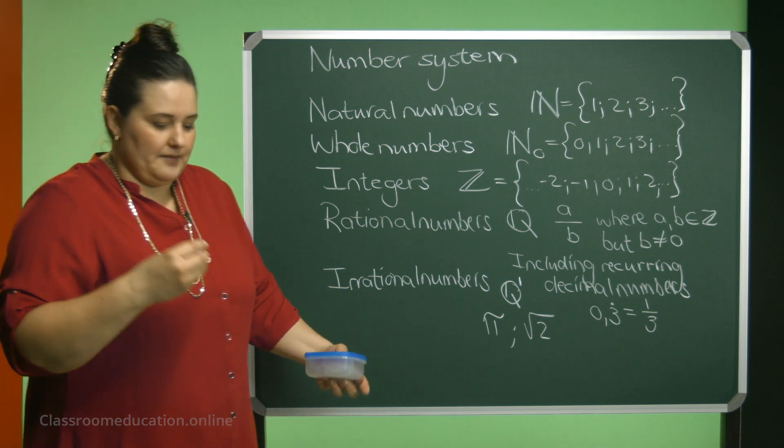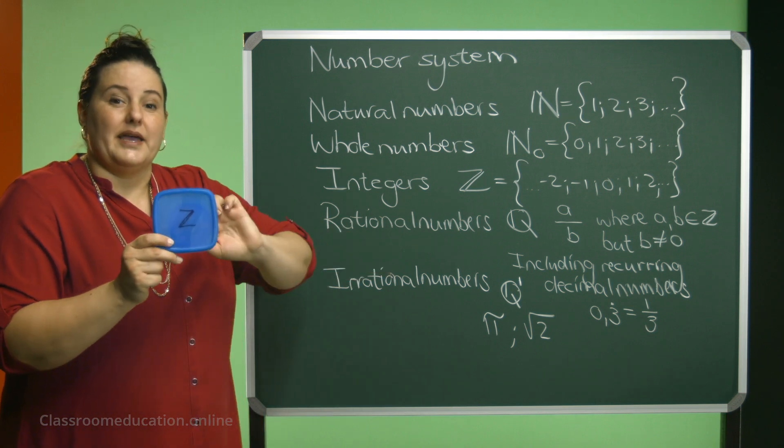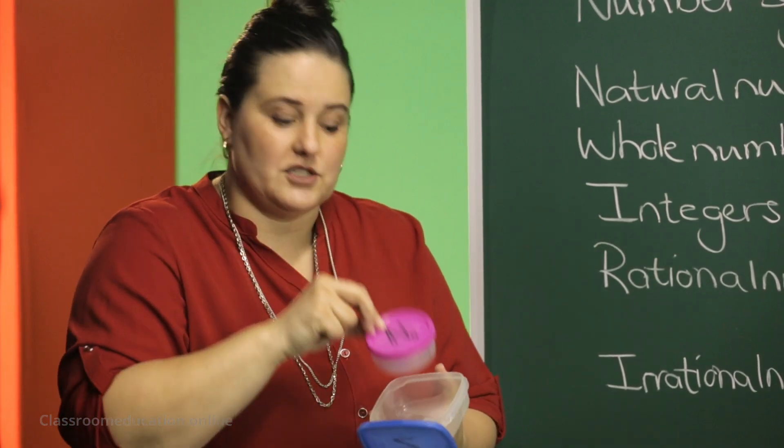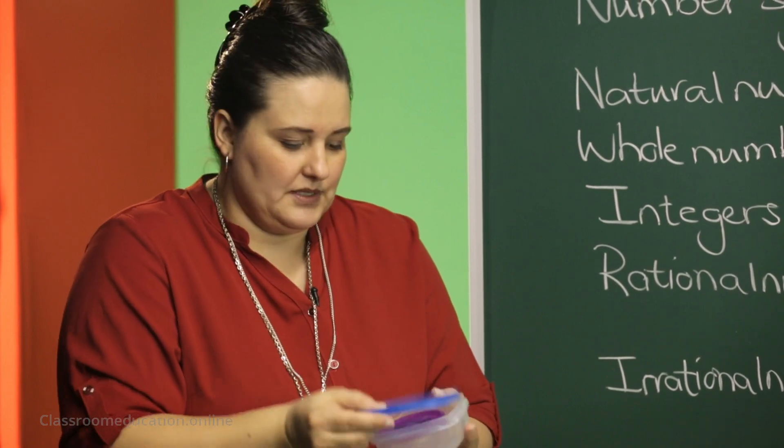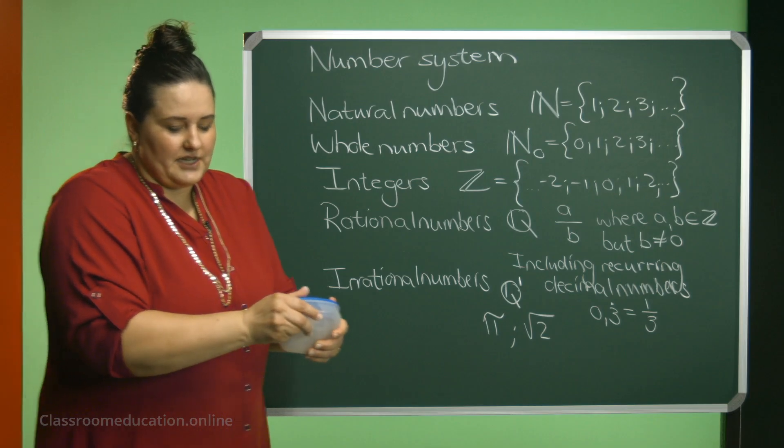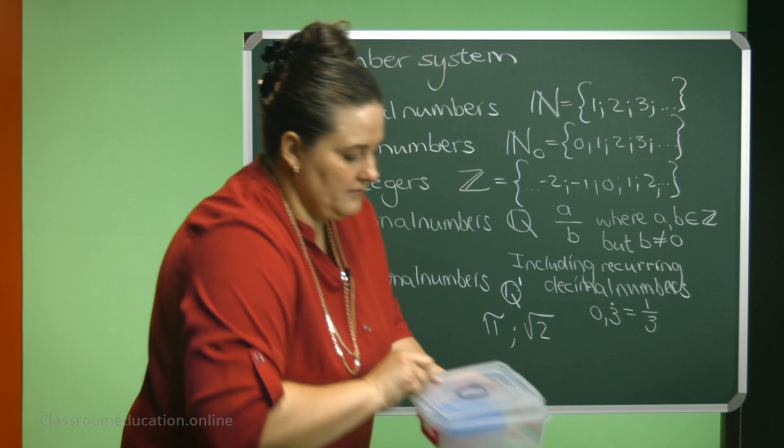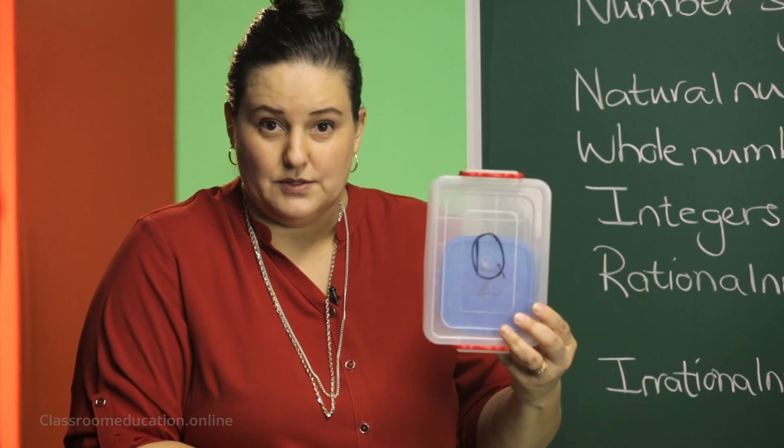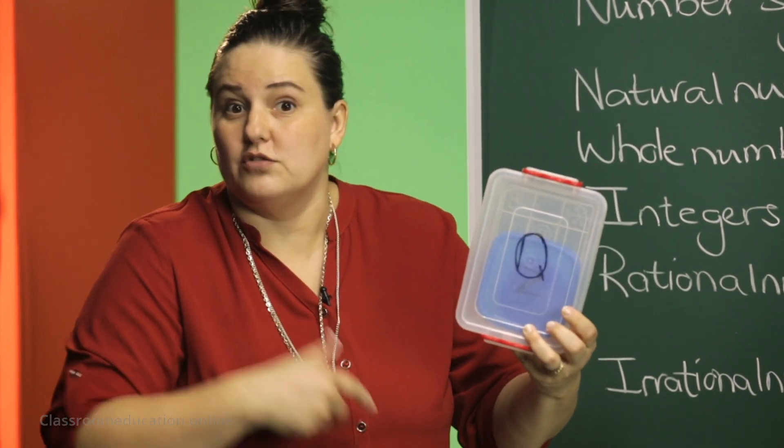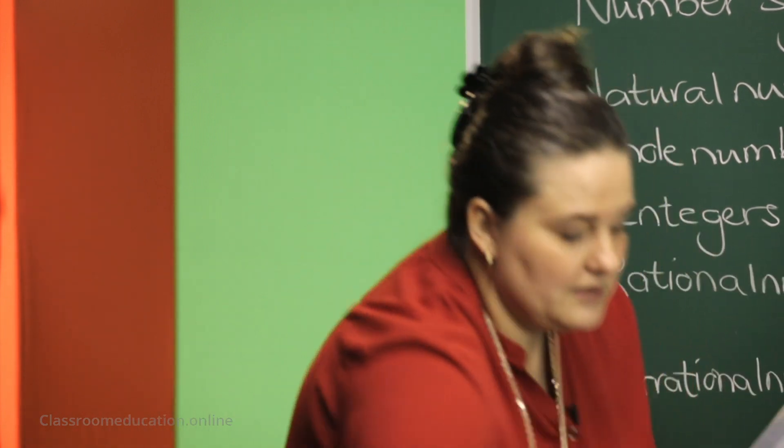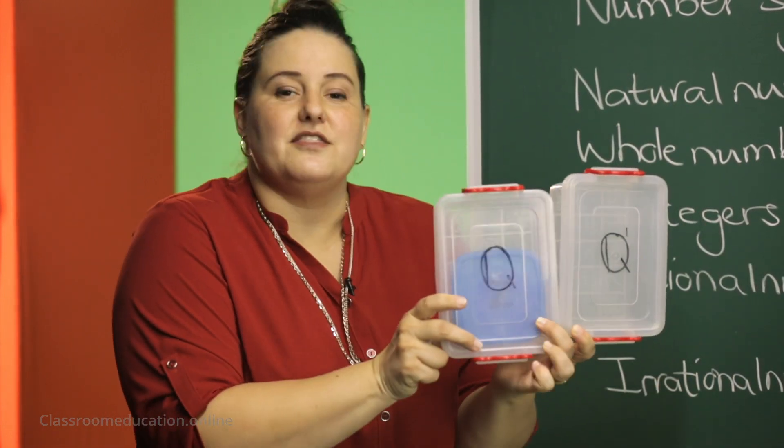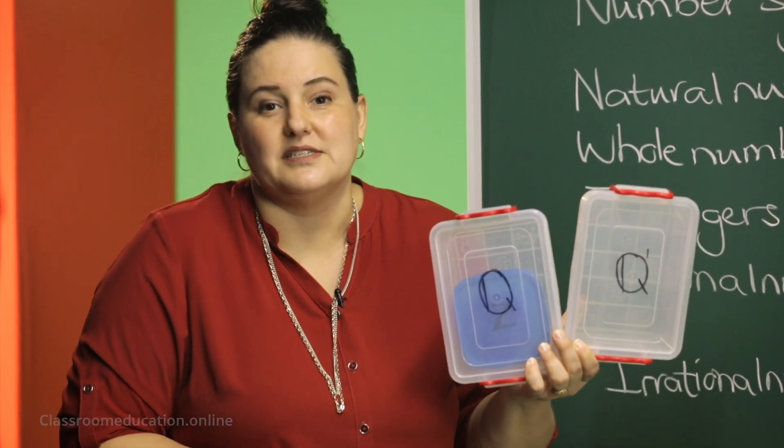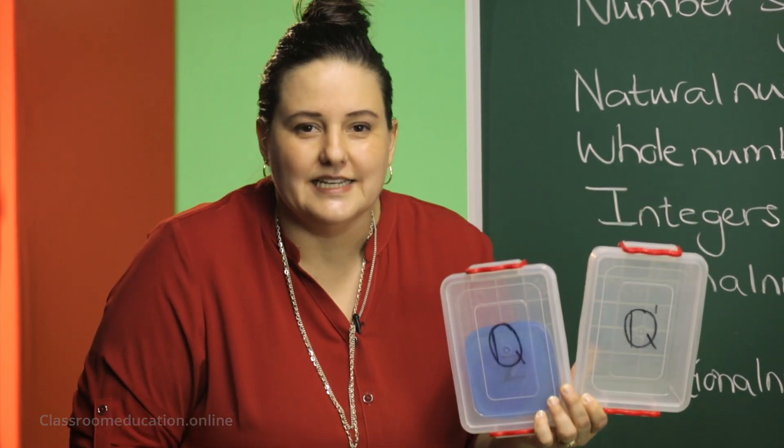So let's quickly have a look again. I have my integers. My integers consist of my whole numbers. The whole numbers consist of the natural numbers. But now, my integers are part of the set of rational numbers. And once I have my rational numbers, there's also irrational numbers. Irrational numbers. And these two, the rational and the irrational numbers, they are our real numbers.